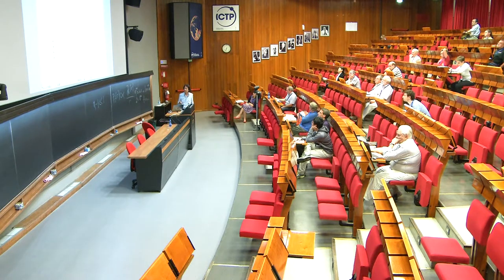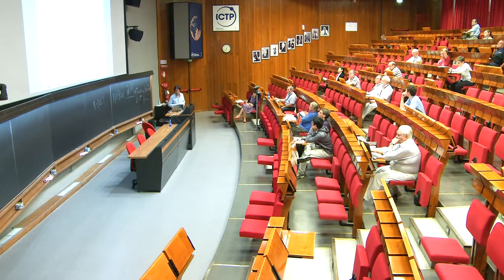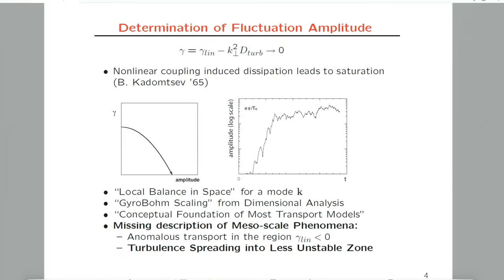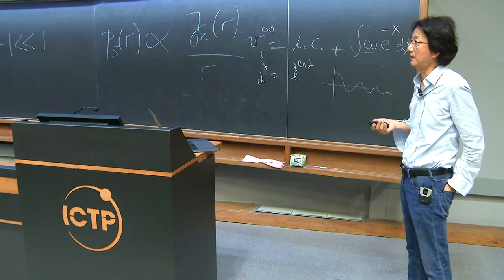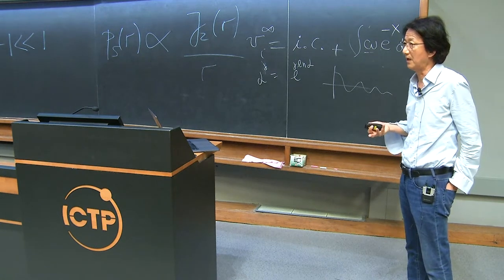But still there are a significant number of examples we cannot really understand based on this paradigm, including anomalous transport in the region where there's no linear instability, and also turbulence spreading into less unstable zones. When we started talking about turbulence spreading, many people had strong objections, which was rather surprising.